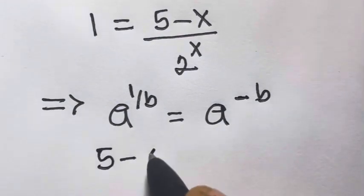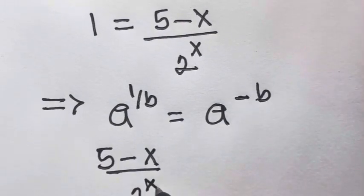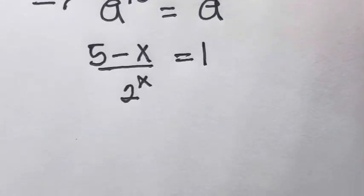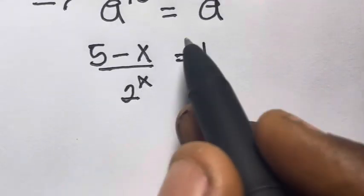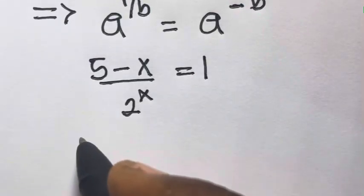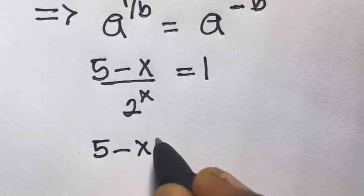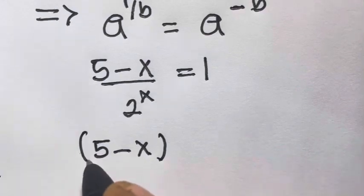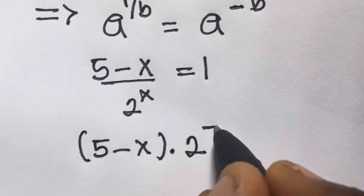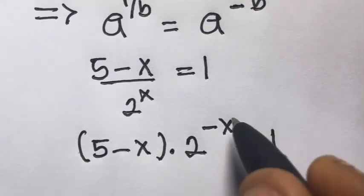We can apply this rule here, so 5 minus x divided by 2^x equals 1 divided by 2 raised to power x, which equals 1. Applying the negative index, we get 5 minus x multiplied by 2 raised to power minus x equals 1.